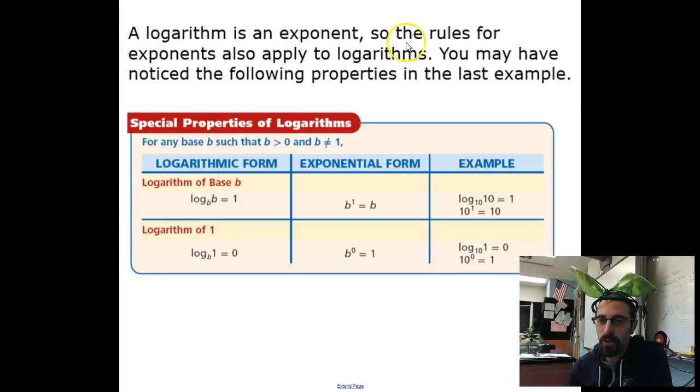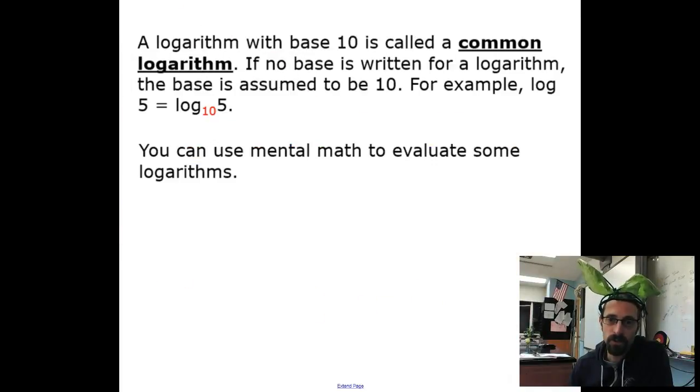A logarithm is an exponent, so the rules of exponents also apply to logarithms. You may have noticed the following properties in the last example. Anything with its base to itself is 1, and that's a logarithm of base b. The other one is the logarithm of 1 means the exponent is 0. That's another note to make sure you get into your notes for Tuesday.